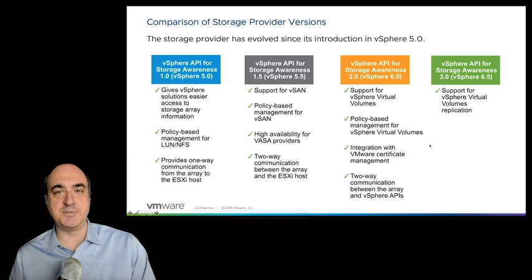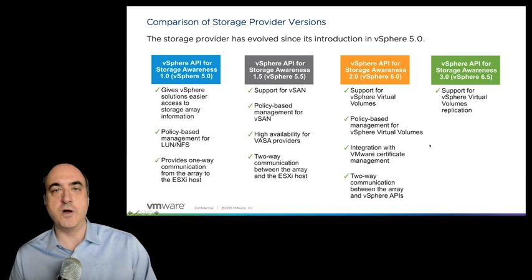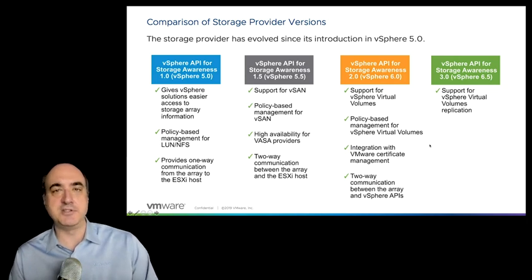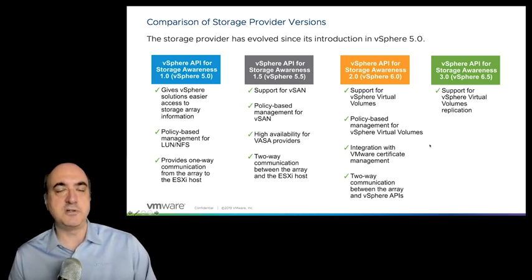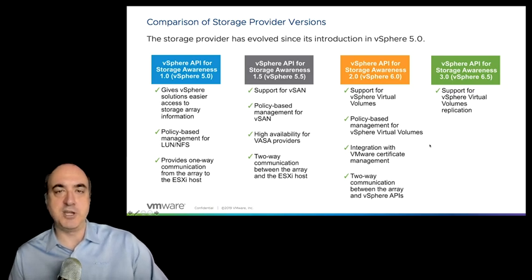VASA has gone through several updates over the years. It was first implemented in vSphere 5 as VASA version 1.0 — a one-way communication channel where the array would advertise its capabilities to vSphere, which we could use to implement storage policies. With vSphere 5.5 Update 1, VASA 1.5 was introduced, which is where vSAN was introduced. vSAN can also participate in the VASA information, so when you build vSAN policies, they can be based on underlying storage characteristics. It also became a two-way communications channel.